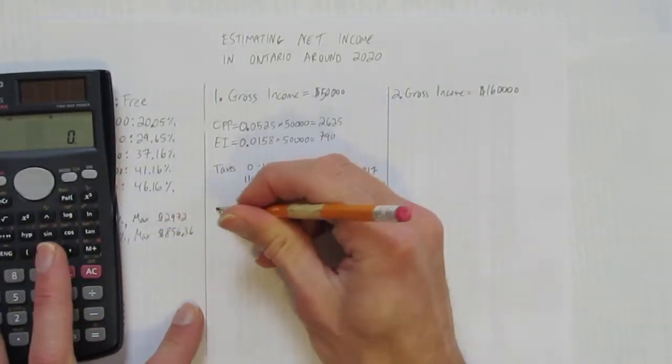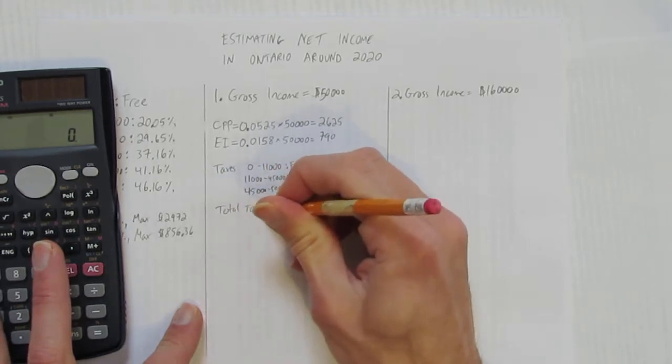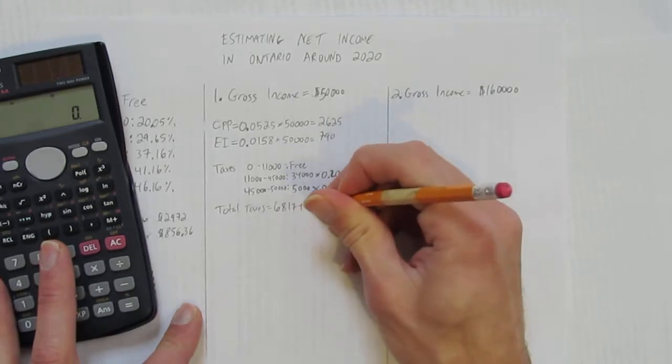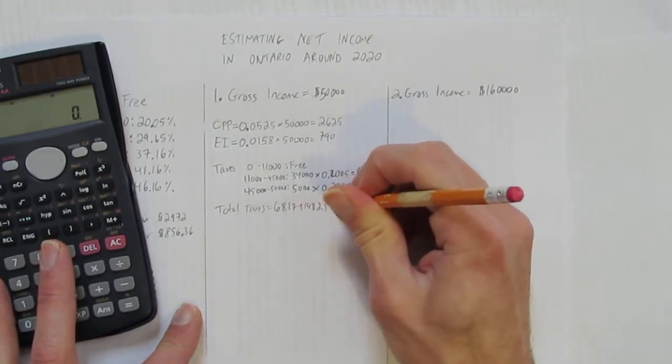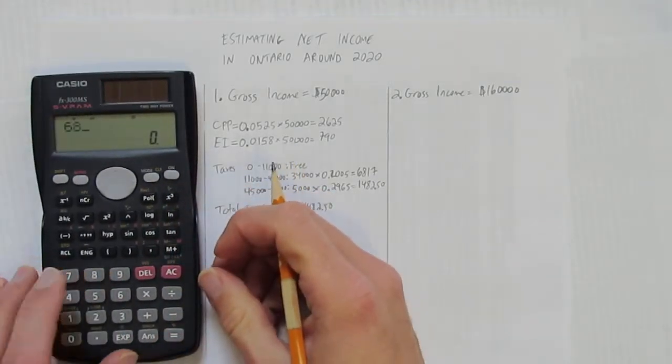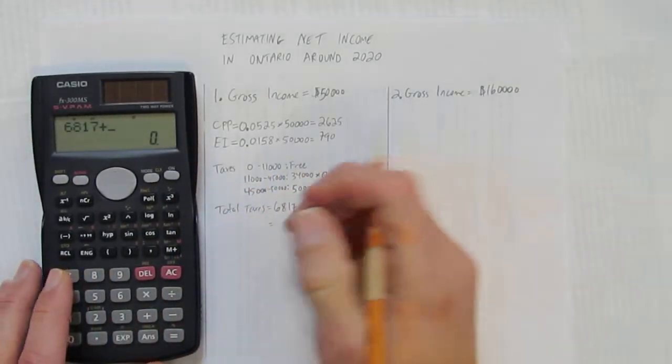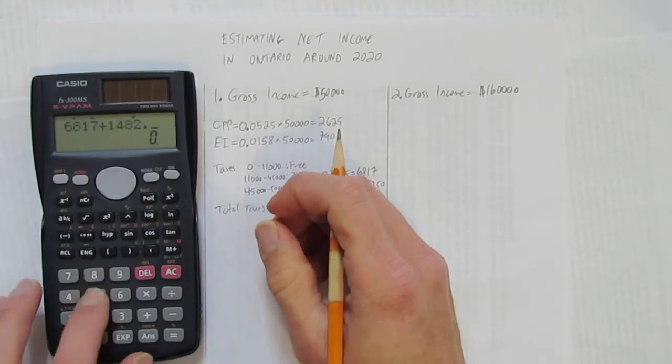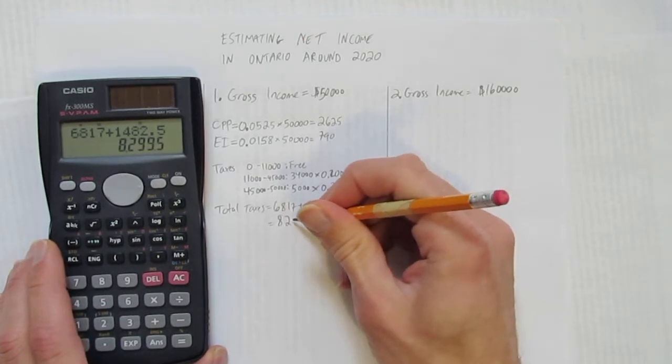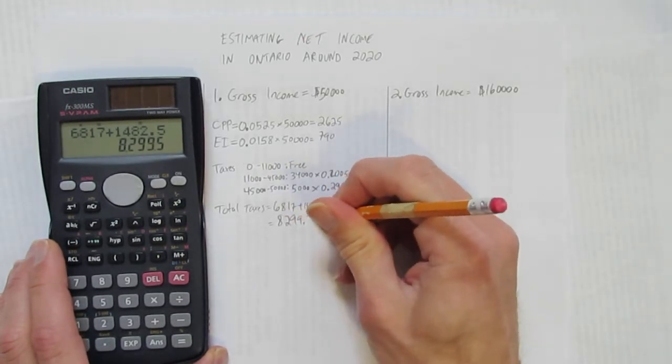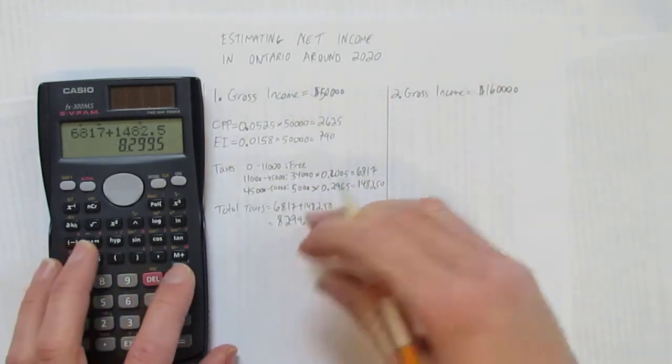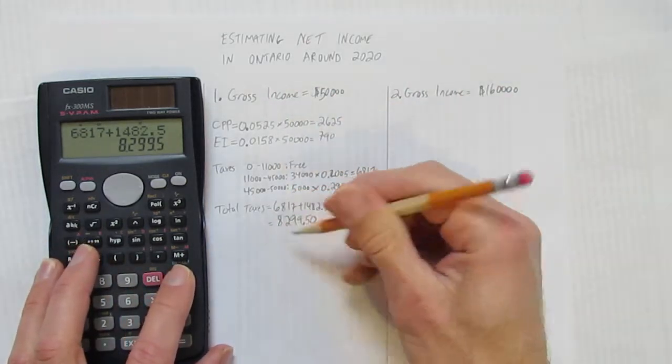So your total taxes is just add those numbers together. $6,817 plus $1,482.50 equals $8,299.50. So your total taxes for the year would be approximately $8,299.50. I'm just saying approximate because this is an estimated way to calculate. We've got our total taxes.